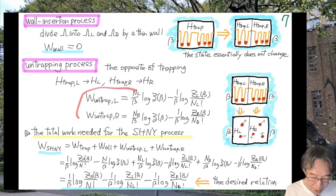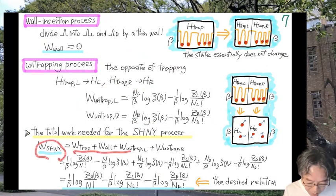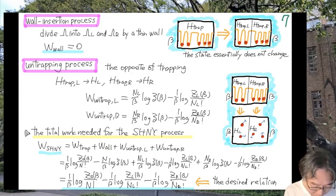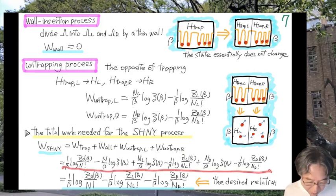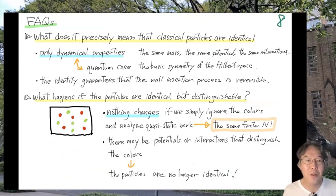It only remains to compute the total work needed for this SHNY process. Since the wall insertion work W_wall is zero, all the terms containing small z cancel, and you get the desired relation. N factorial has been derived.